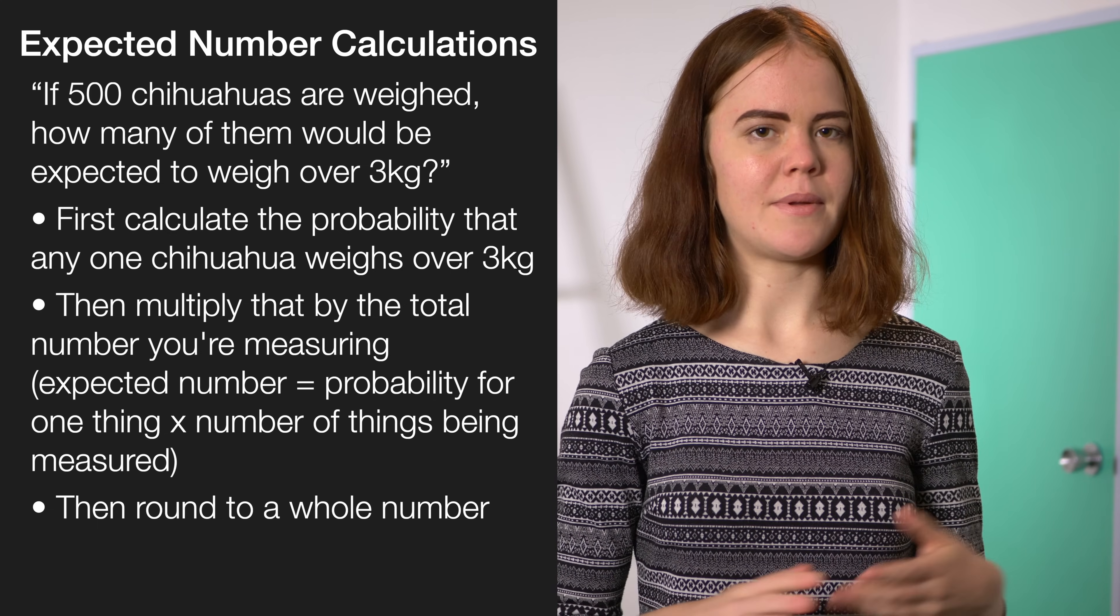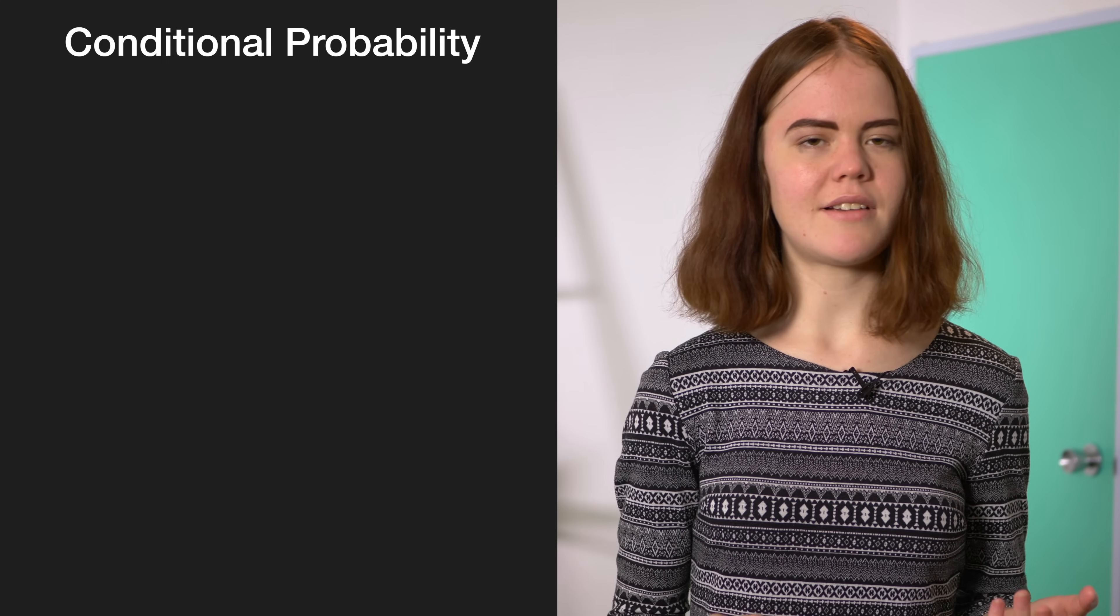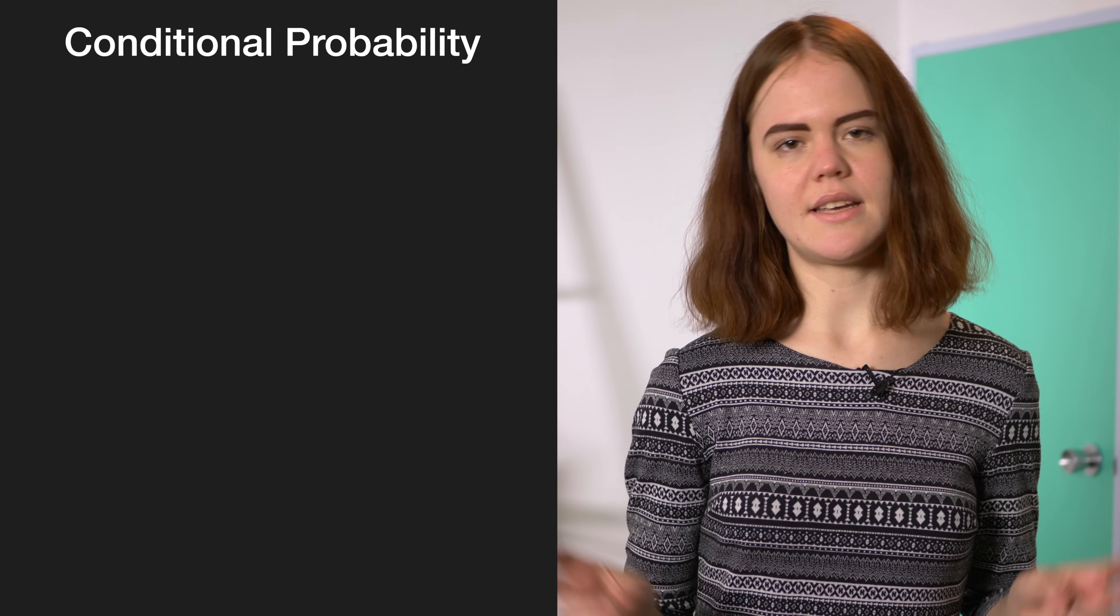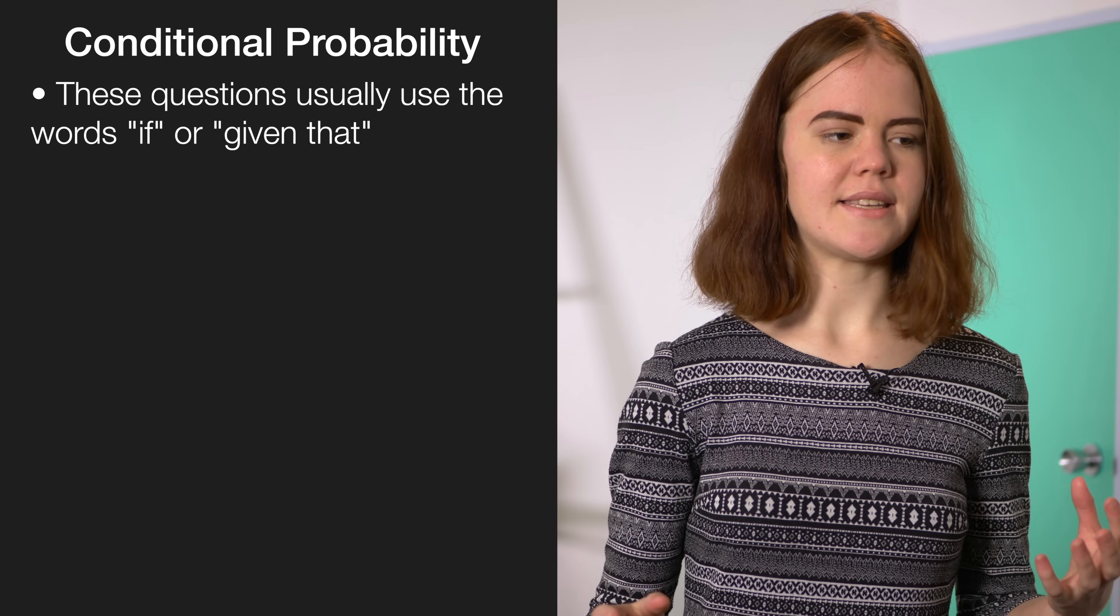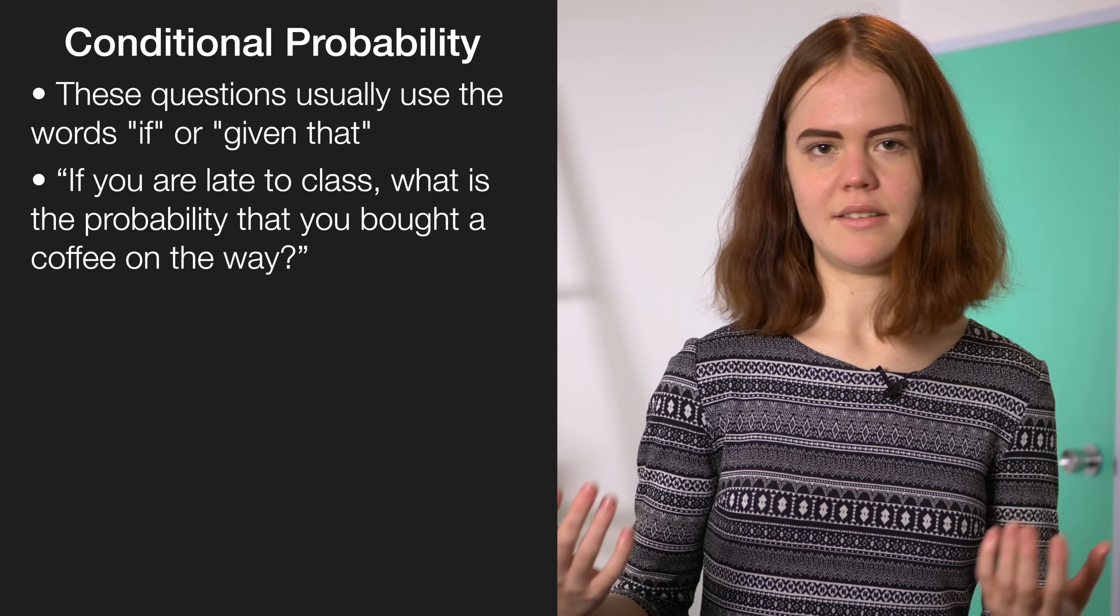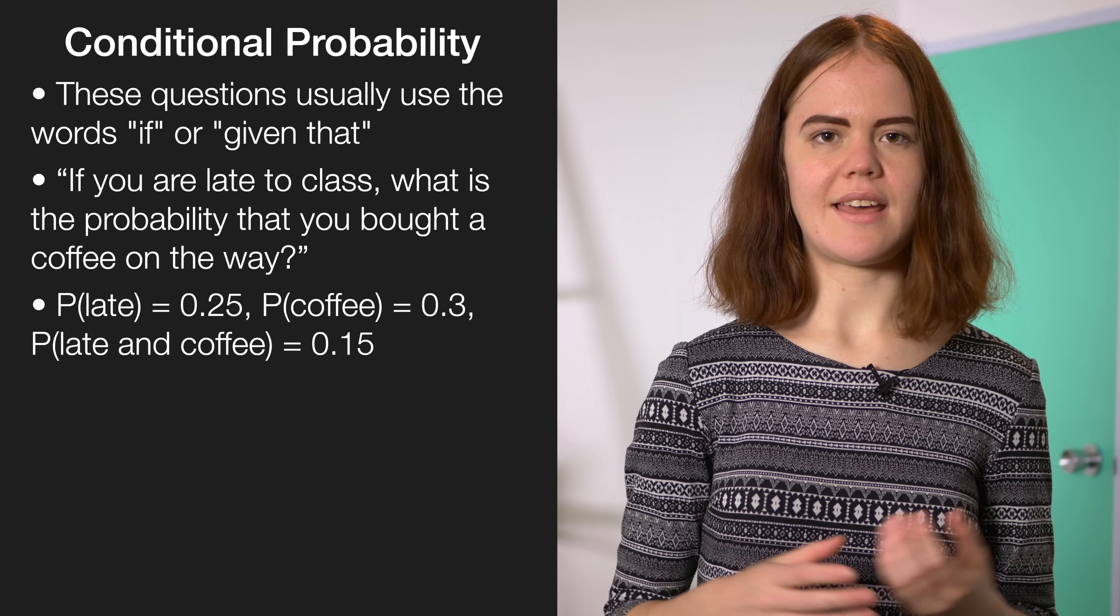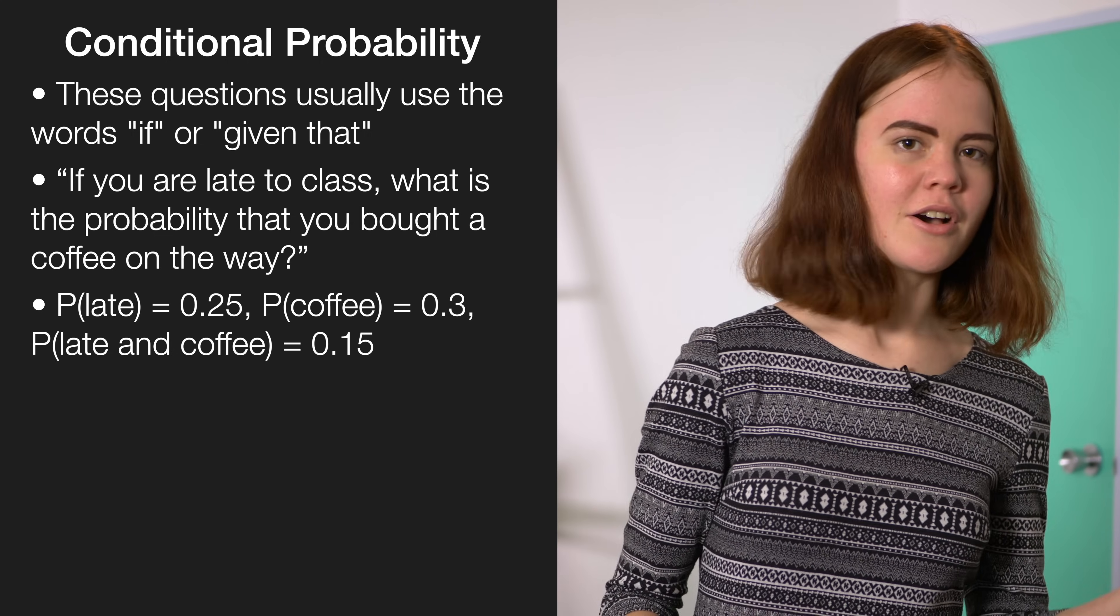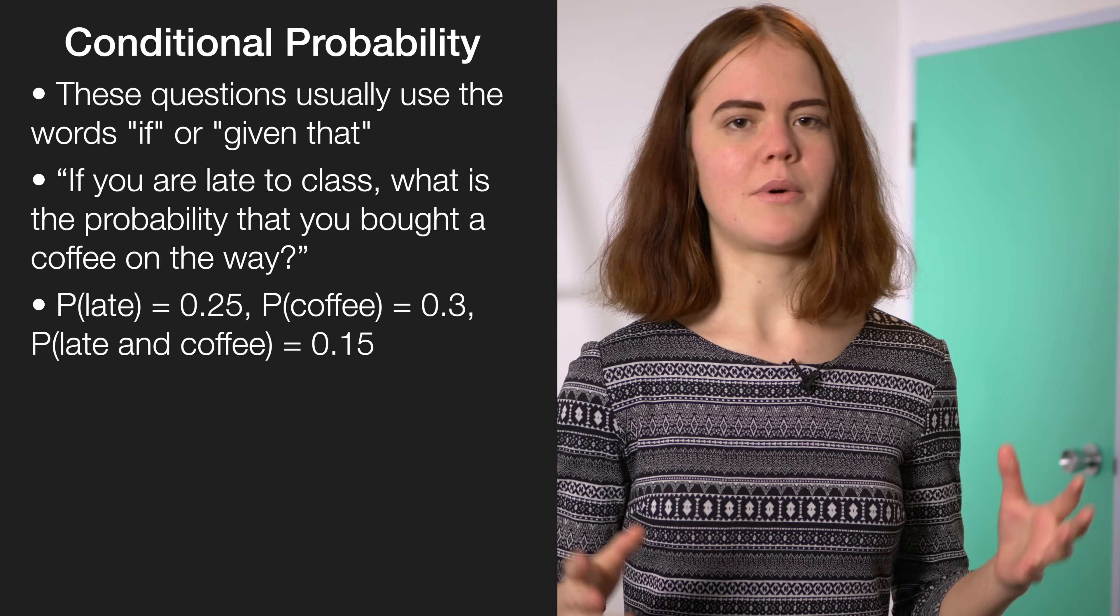Another example of a skill that can come up in any question is conditional probability. It's probably one of the trickier things to wrap your head around in this exam. You can usually recognise these questions because they'll use the words if or given that. So, for example, the question might say, if you're late to class, what's the probability you bought a coffee along the way? So, let's say I'd already calculated that the probability that I was late was 0.25, the probability that I bought a coffee was 0.3, and the probability that I was late and I bought a coffee was 0.15.